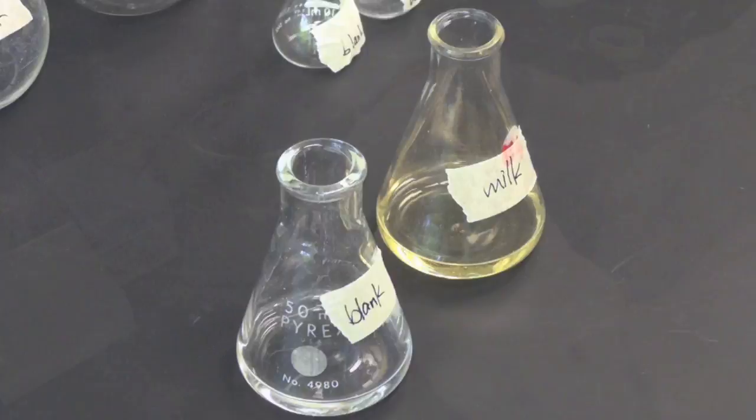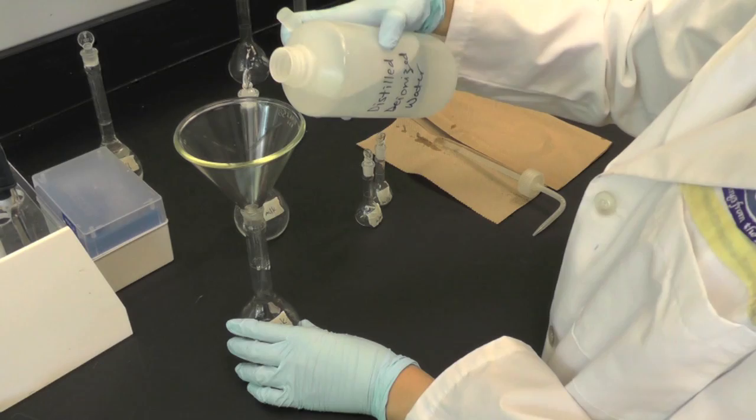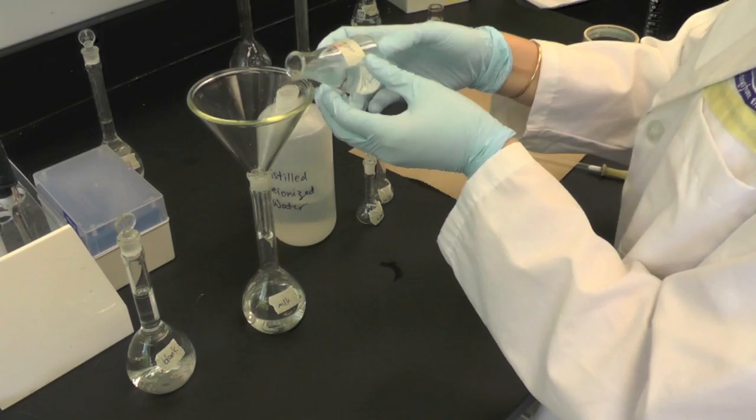After heating, transfer the samples and blank separately into 100 ml volumetric flasks. Rinse each Erlenmeyer flask with DD water and add it to the volumetric flask, makeup to volume. Invert a few times to mix.